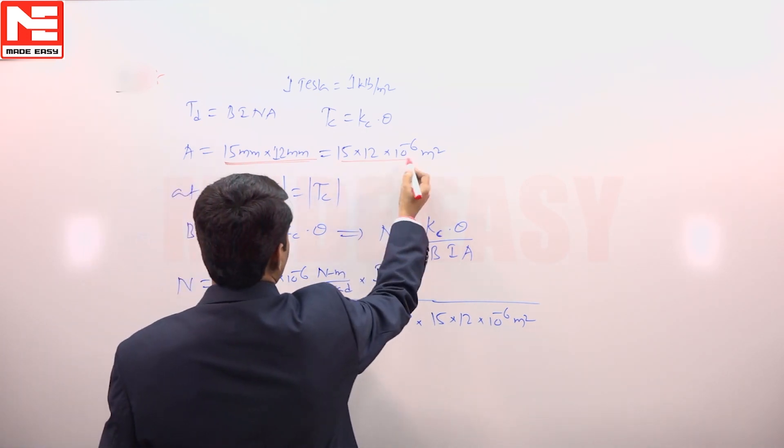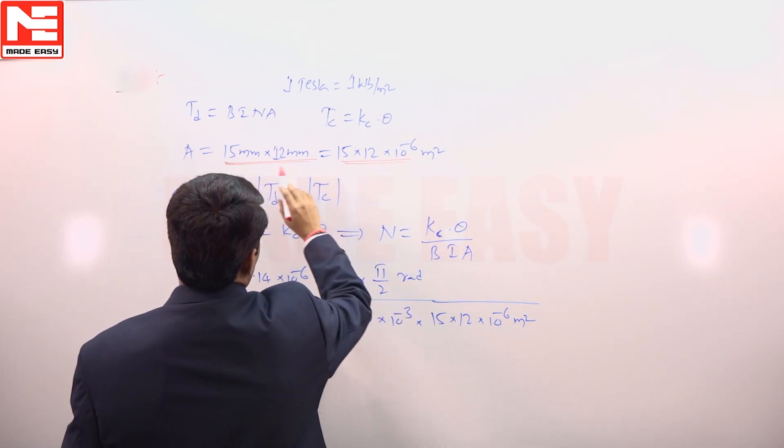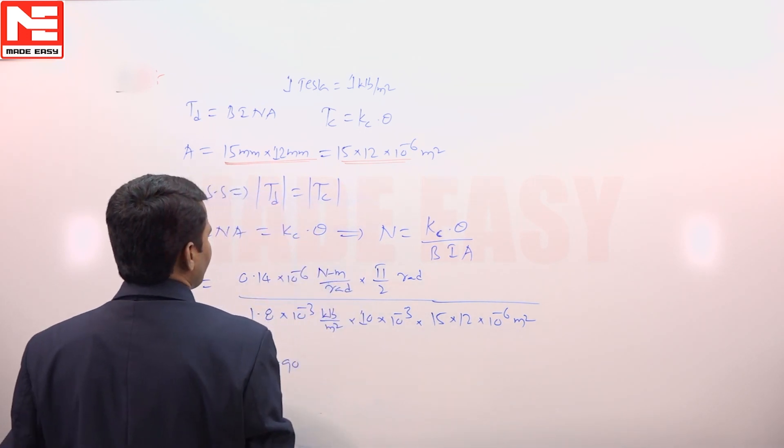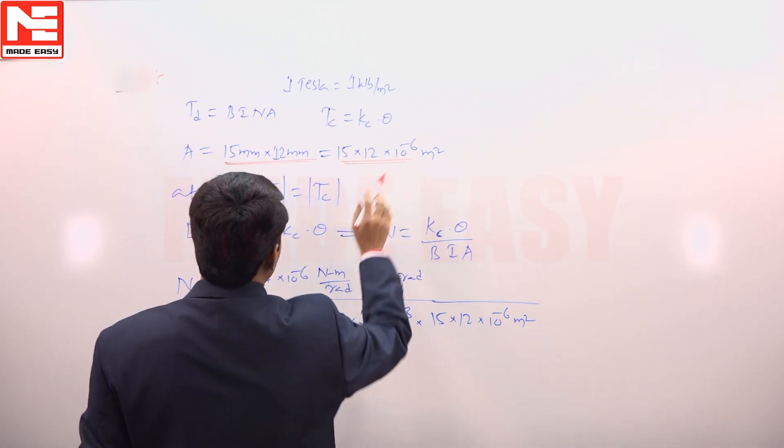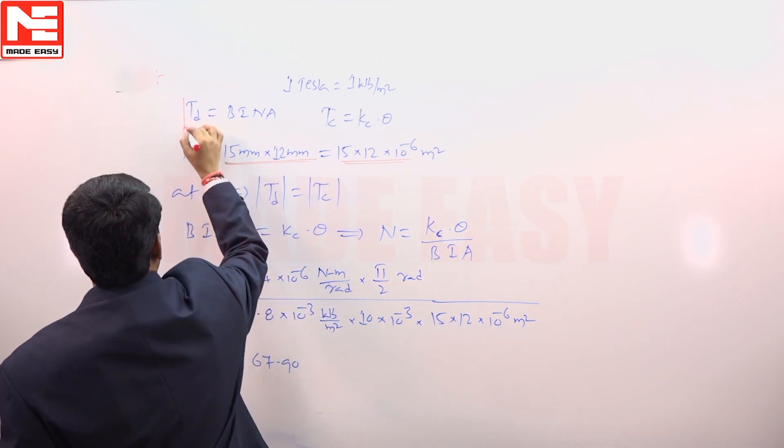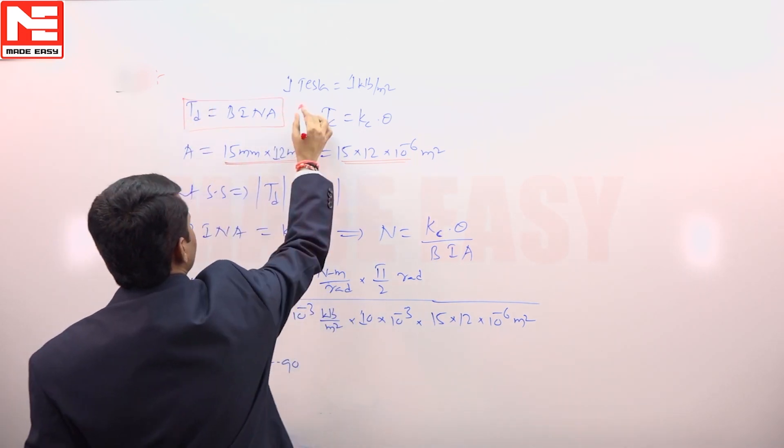You must convert into meter square. 1 mm is equal to 10 to the power of minus 3, so 15 into 12, 10 to the power of minus 6 meter square. Torque is equal to BINA.